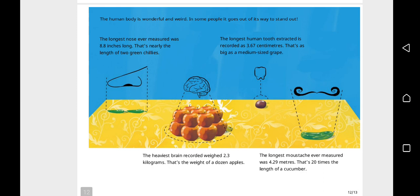The human body is wonderful and weird. In some people, it goes out of its way to stand out. The longest nose ever measured was eight point eight inches long—that's nearly the length of two green chilies. The heaviest brain recorded was two point three kilograms—that's the weight of a dozen apples.